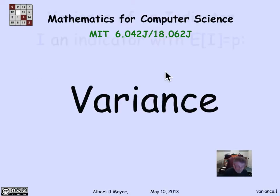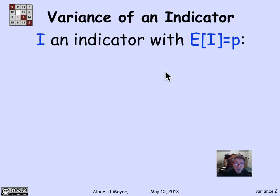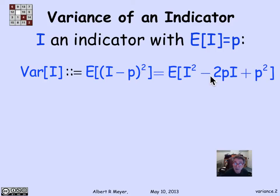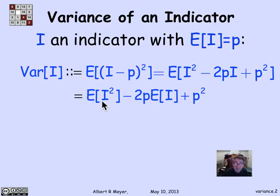Step one is to expand (I minus p) squared algebraically: we get the expectation of I squared minus 2pI plus p squared. Applying linearity of expectation gives the expectation of I squared, minus 2p times the expectation of I, plus p squared. The expectation of the constant p squared is just p squared.